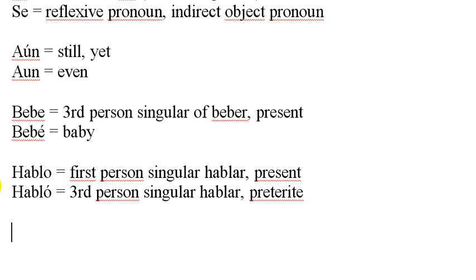The last example is one you'll see a lot with verb conjugations — the present tense versus the preterite and other tenses. 'Hablo' is I speak in the present tense, and 'habló' with the accent mark is he, she, or usted spoke in the past tense preterite.